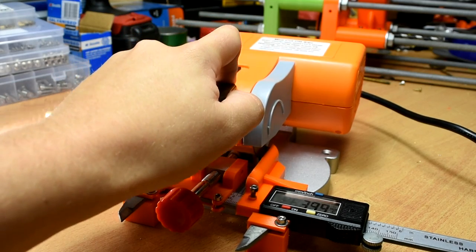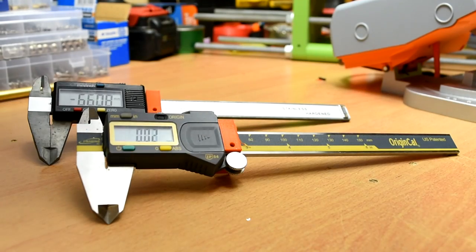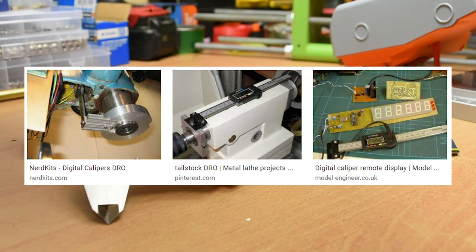But now onto the main event. Months ago I upgraded my cheap calipers to this nice origin cow pair, and have been wondering what to do with the old ones for some time. I've seen people use them to make DROs for lathes and mills, and I thought this saw could benefit from a similar system.